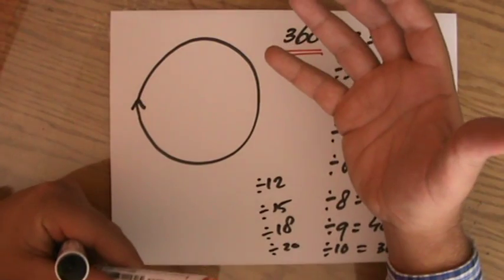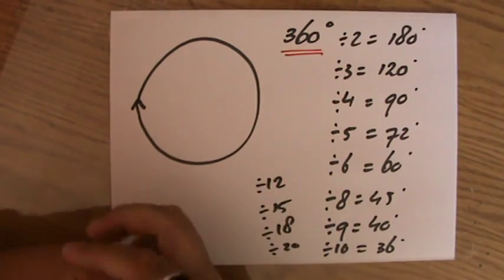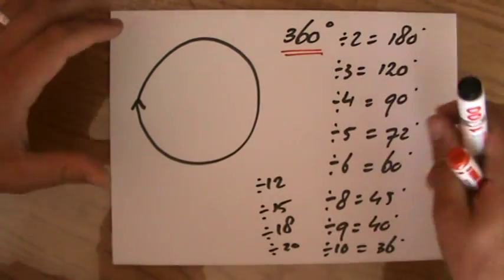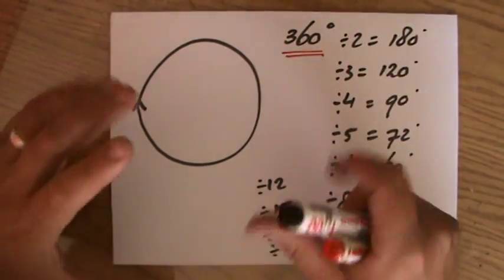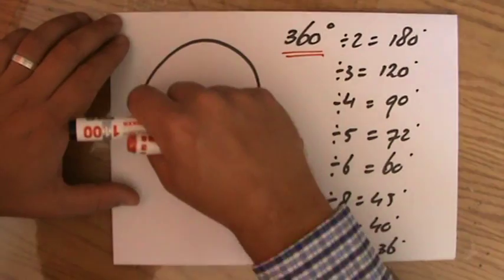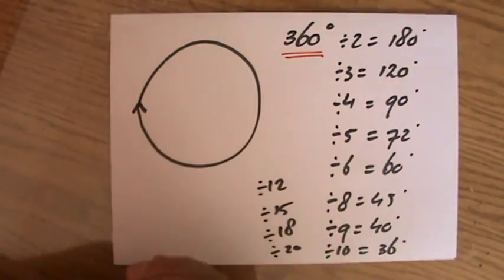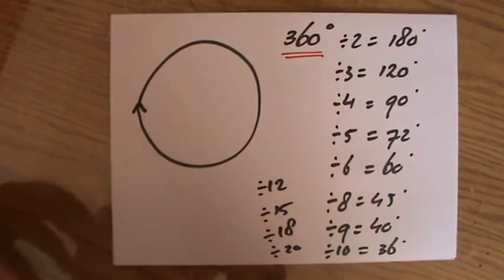The number 360 actually has 24 divisors. There are 24 numbers by which you can divide 360 by without getting a fraction, or without getting a remainder. So, it's a really nice number to work with.